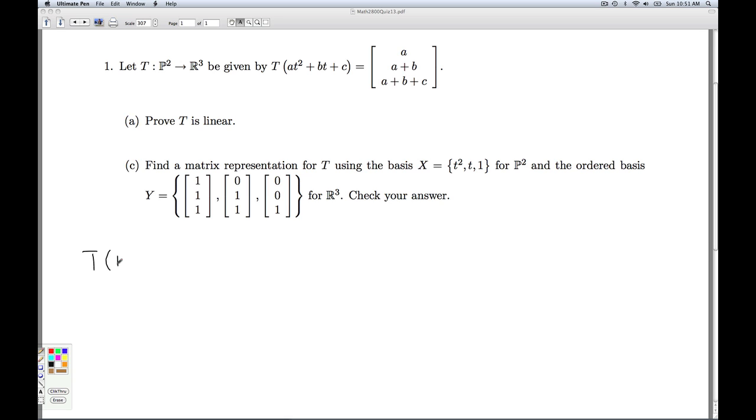And last but not least, T of 1, the third basis vector, just as before, is going to give me the vector 0, 1, 1. I have to write that as a linear combination of the new basis y. And once again, you can spot the answer. C1 is 0, C2 is 0, C3 is 1.